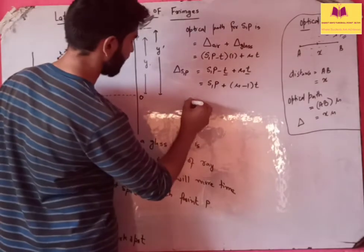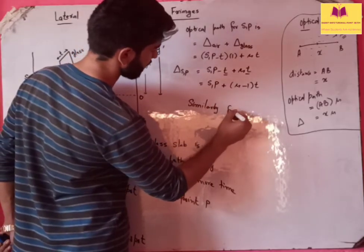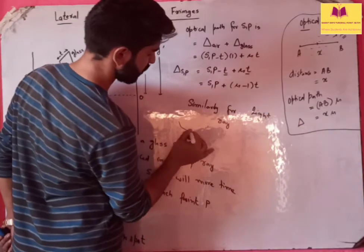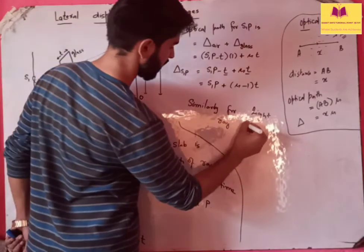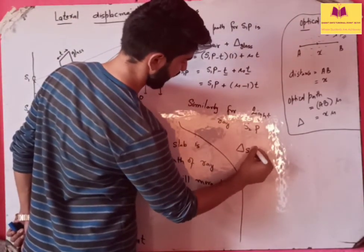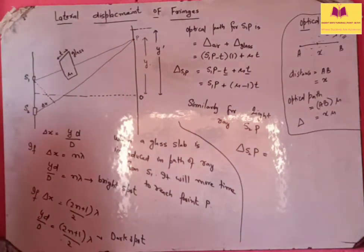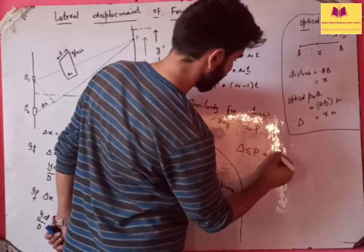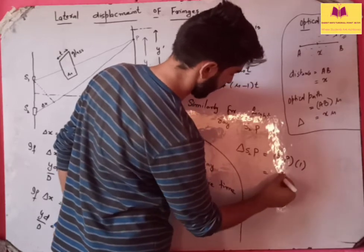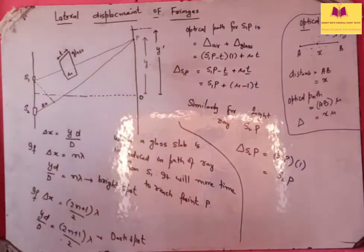Similarly, for the second light ray S2P: this ray is only traveling in air — there is no extra glass slab in its path. So the optical path for S2P is simply S2P multiplied by the refractive index of air, which is 1. Therefore, the optical path for S2P is just S2P.